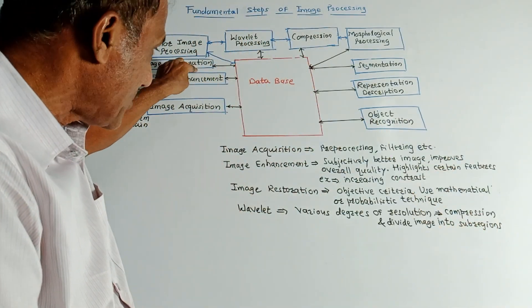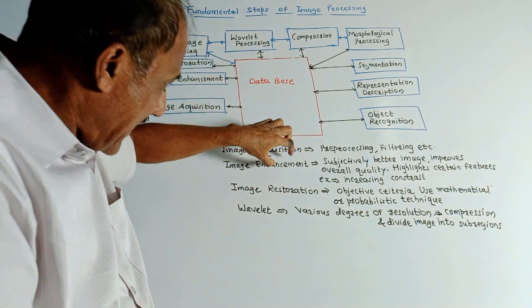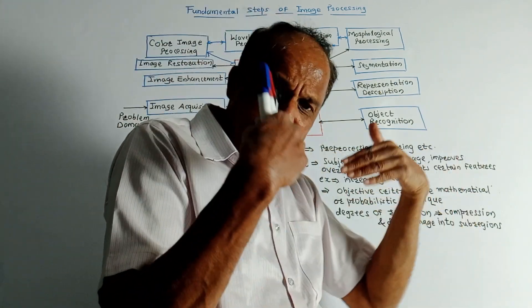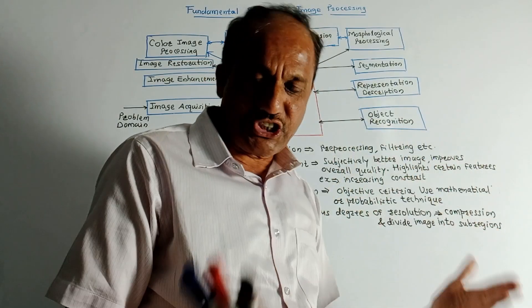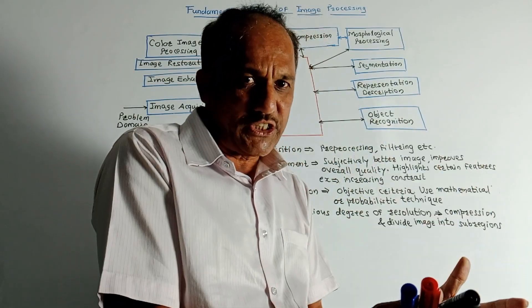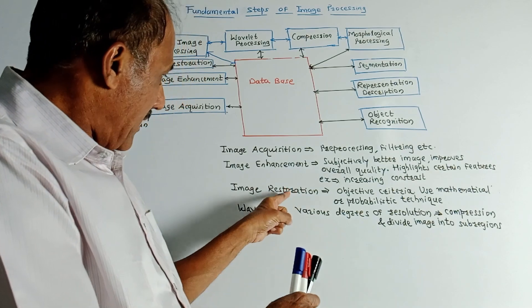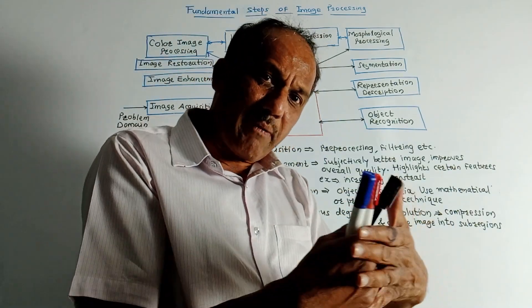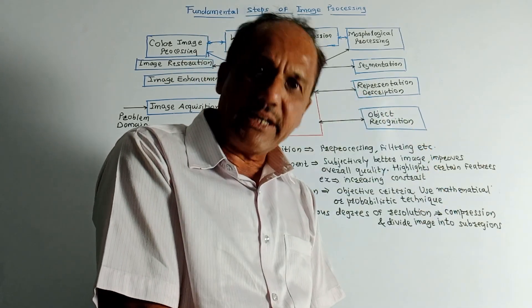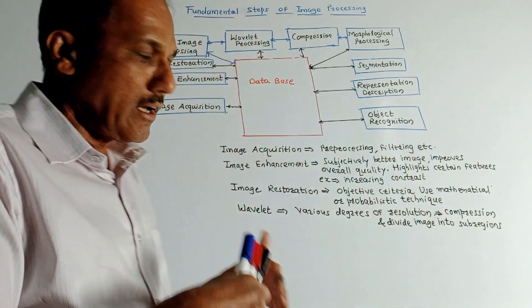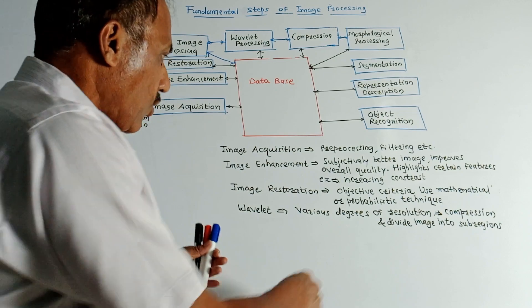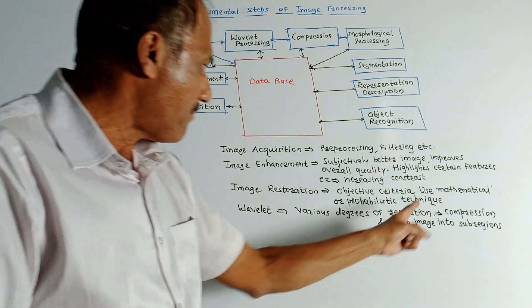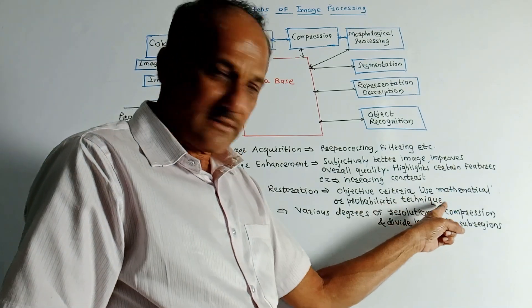The next block is image restoration. Unlike image enhancement, which is subjective — for example, changing contrast — image restoration also makes changes in an image, but by using certain mathematical or probabilistic techniques. So it is an objective criteria, making use of mathematical or probabilistic methods.